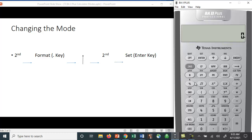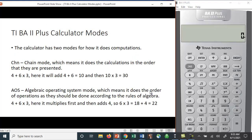Let's see if we can change this. You hit second format, and if you use this up arrow key, you see CHN - that's what we had, the chain command. To change this, you hit second set, and it changes it to AOS. Let's go back to our previous problem: 4 + 6 × 3. In fact, we get 22, which is what we want.